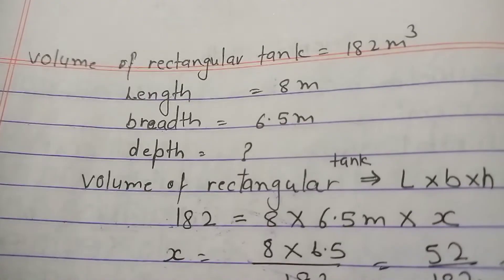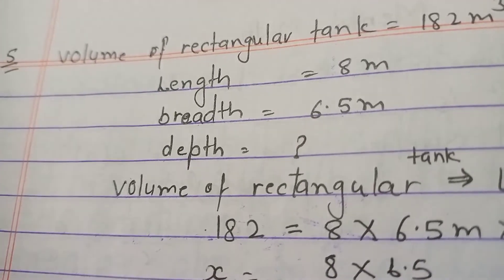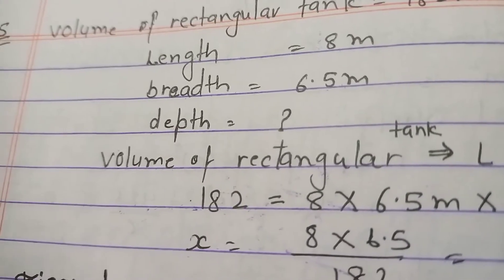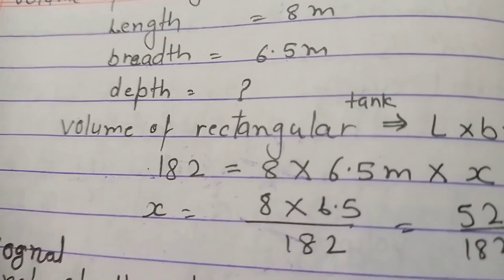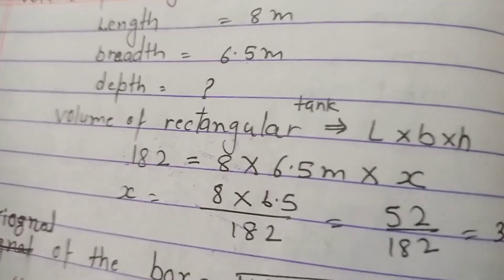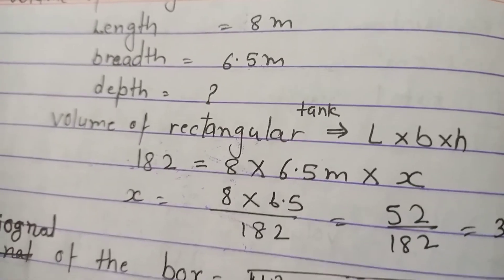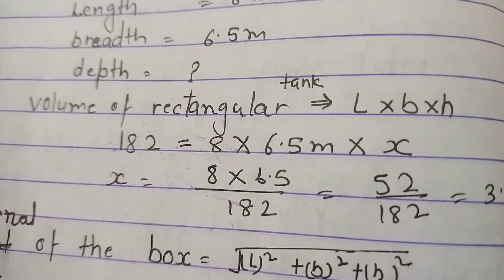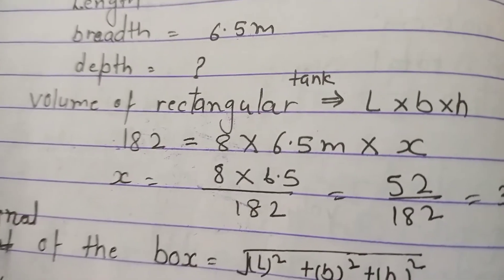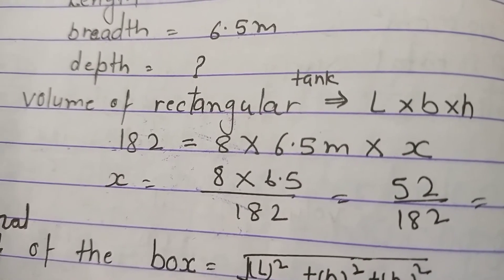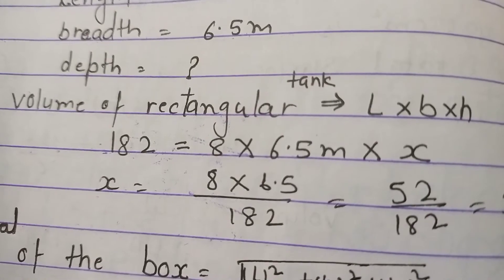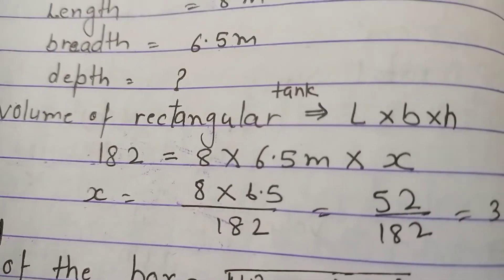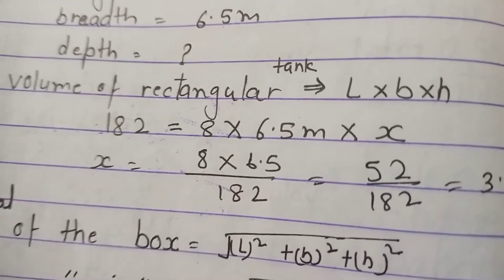Volume of rectangular tank is 182 meter cube. Length is 8 meter, breadth is 6.5 meter, depth we don't know. Volume of rectangular tank = length × breadth × height. So 182 = 8 × 6.5 × x, so x = (8 × 6.5)/182 = 52/182 = 3.5 meter.